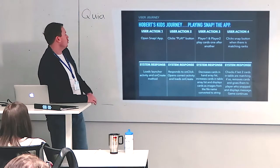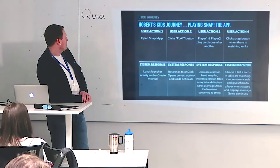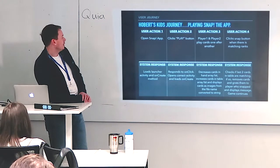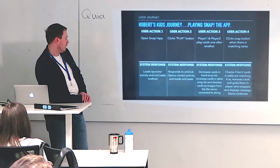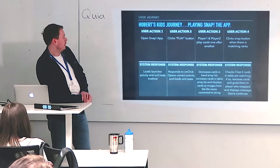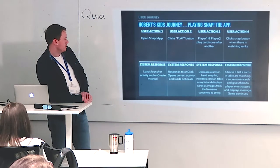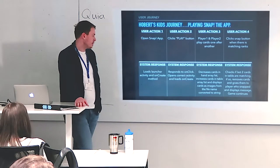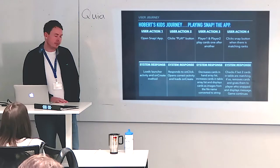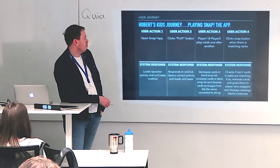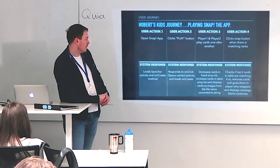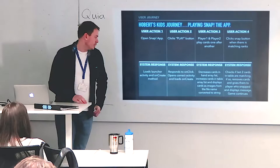Part of the user journey using the app: Hopper would open the Snap app — the system response is to load the launcher activity and onCreate method. The user clicks the play button — the system calls onClick, opens the correct activity and loads onCreate for that activity. Player one and player two then play cards one after another — the system decreases cards in hand, increases cards on the table, and displays the cards as images from the file name compared by strength. Finally, clicking the snap button when there is a matching rank causes the system to check if the last two cards on the table match; if so, it removes the cards, gives them to the player who snapped, displays a message, and the game continues.